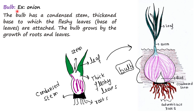Bulb — the example of a bulb is onion. In this onion plant, you can see these are the leaves and this is the stem. The base of these leaves gets swollen and becomes fleshy, which we eat — that is the onion. This stem gets reduced and condensed. So when we cut an onion, we find a hard part at the base which we don't eat — that's the stem.